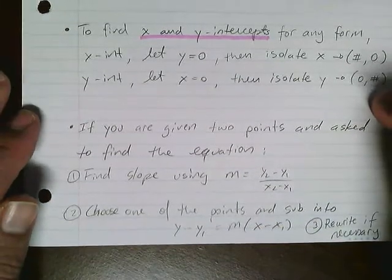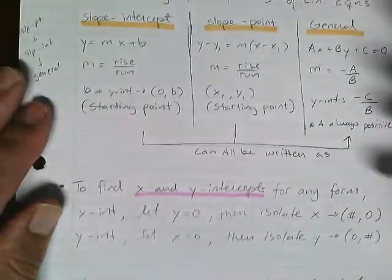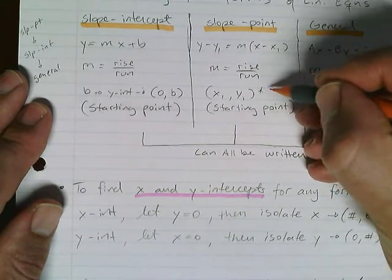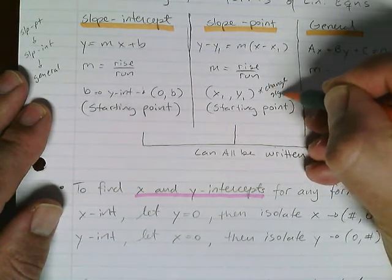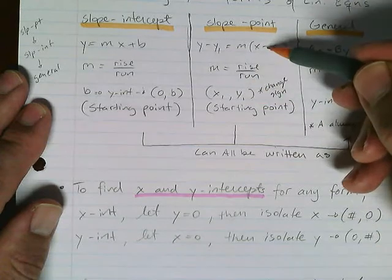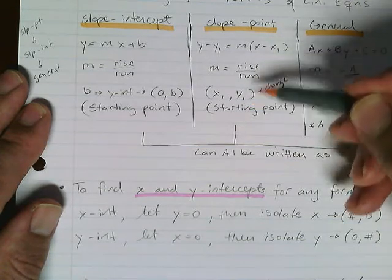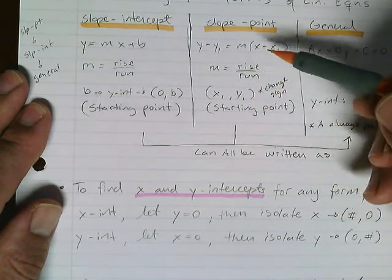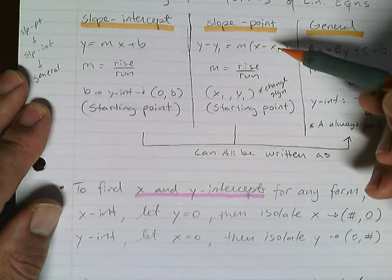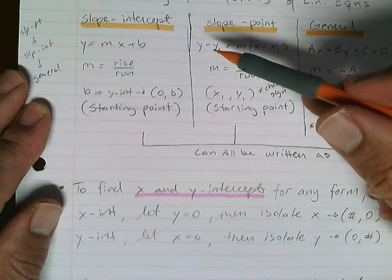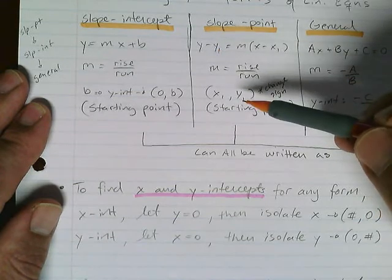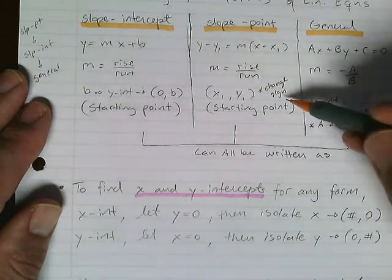Change the sign. Whether you plug it in there or you bring it out, they will always have opposite signs. If this had been negative six, then over here that would be positive six. If this had been positive four, then it would be negative four here. Don't forget that.